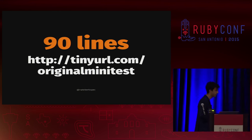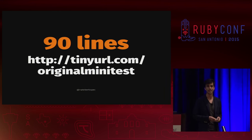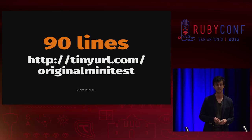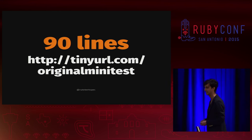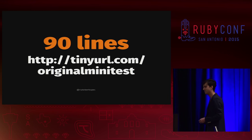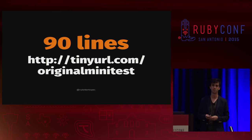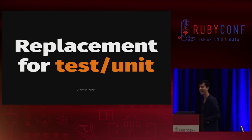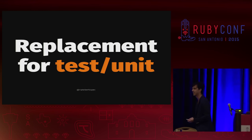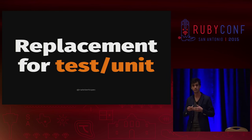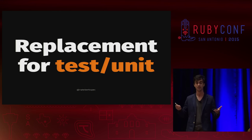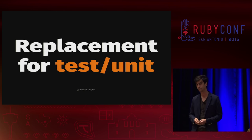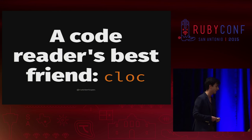A bit of a history lesson: the original Minitest was 90 lines of code. Ryan Davis — sitting right up here in front — was nice enough to resurrect that version for me; it's available at tinyurl.com/originalminitest for an interesting read. Ryan has said in other conference talks that it was originally a replacement for TestUnit. He was saddled with the maintainership of TestUnit, thought it was too complicated, and wanted to see if he could write something that did what TestUnit does in less code. And from that beginning we have the Minitest we have today.